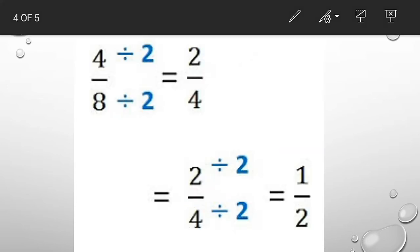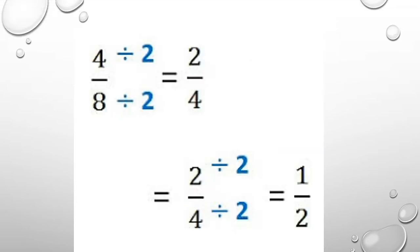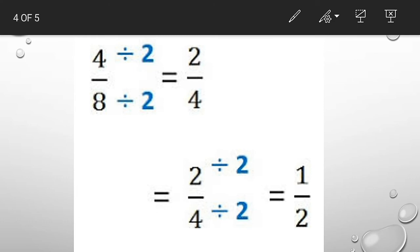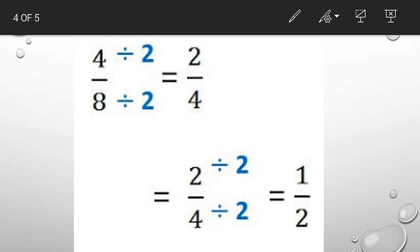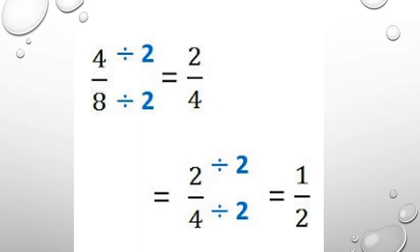Now this one. Here is the question 4 by 8. We will divide by 2. 4 divided by 2 is 2, and 8 divided by 2 is 4. Now 2 by 4. This is not the lowest term. We will divide by 2 again. 2 divided by 2 is 1, and 4 divided by 2 is 2. Right children?